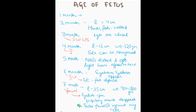At five months, nails are distinct and soft, and light hairs appear on the head. The mnemonic: since at four months we recognized a female, imagine females are obsessed with nails and hair — so at five months nails are distinct and soft, and light hairs appear on the head.